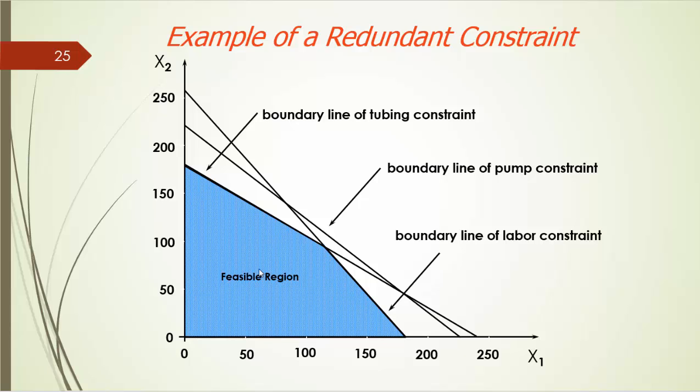What stands out here is that the feasible region has nothing to do with the pump constraint boundary line. That is to say, with or without the pump constraint, the optimal solution will be just the same.